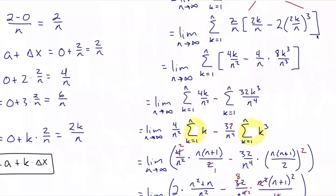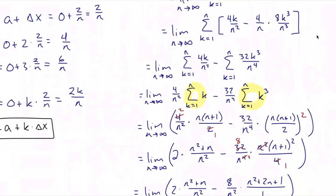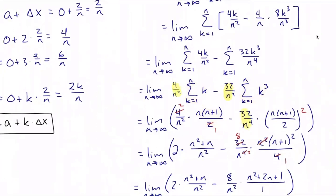Looking back at the previous page, the sum of the first n integers equals n(n+1)/2, and the sum of the first n integers cubed equals [n(n+1)/2]². We substitute both of those formulas for the summations. The constants out front remain, so we now have expressions entirely in terms of n — no k appears anymore.